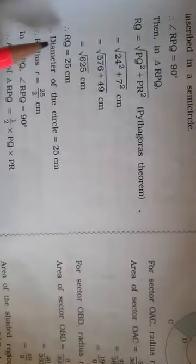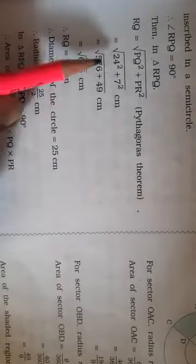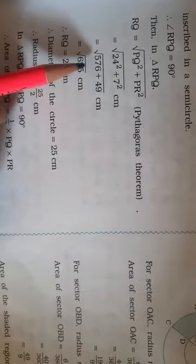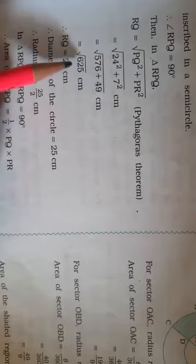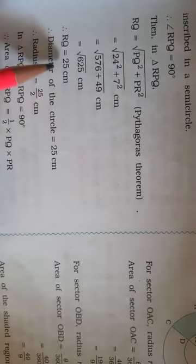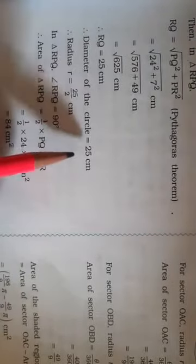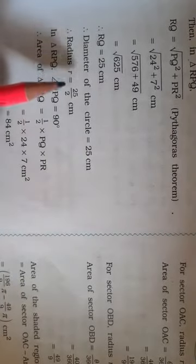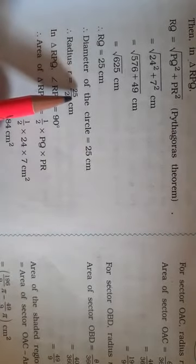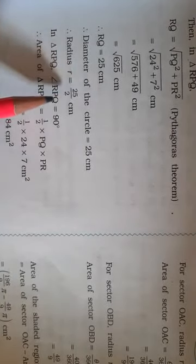So RQ = √(24² + 7²) = √(576 + 49) = √625 = 25. Therefore the diameter of the circle is 25 cm, and the radius is 25/2.